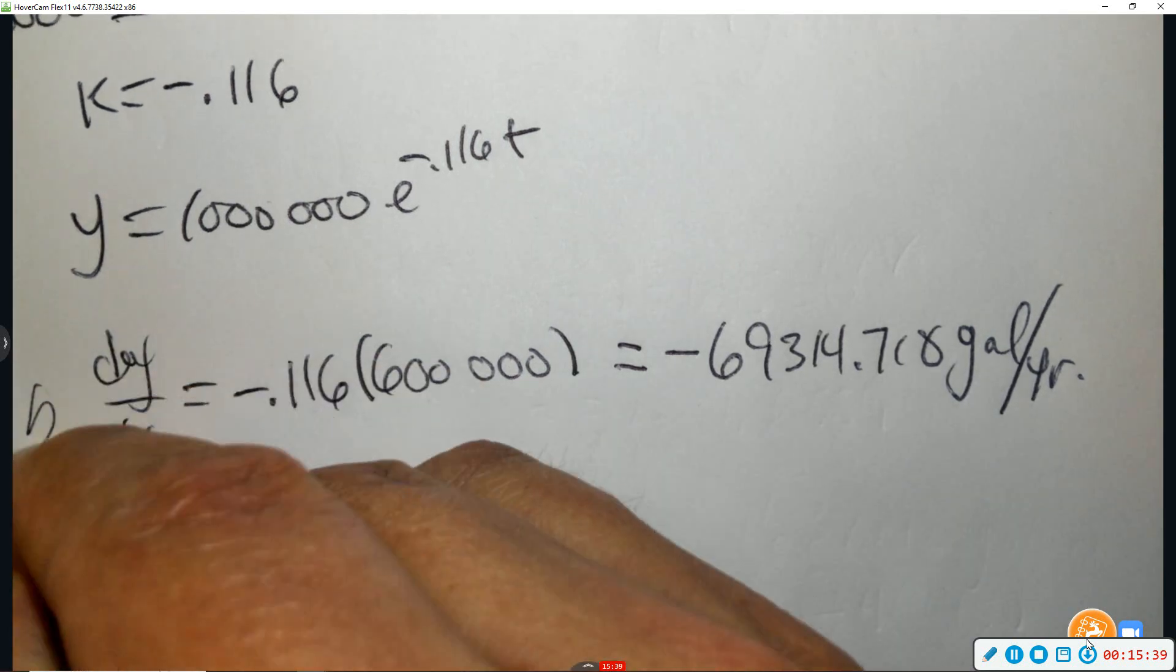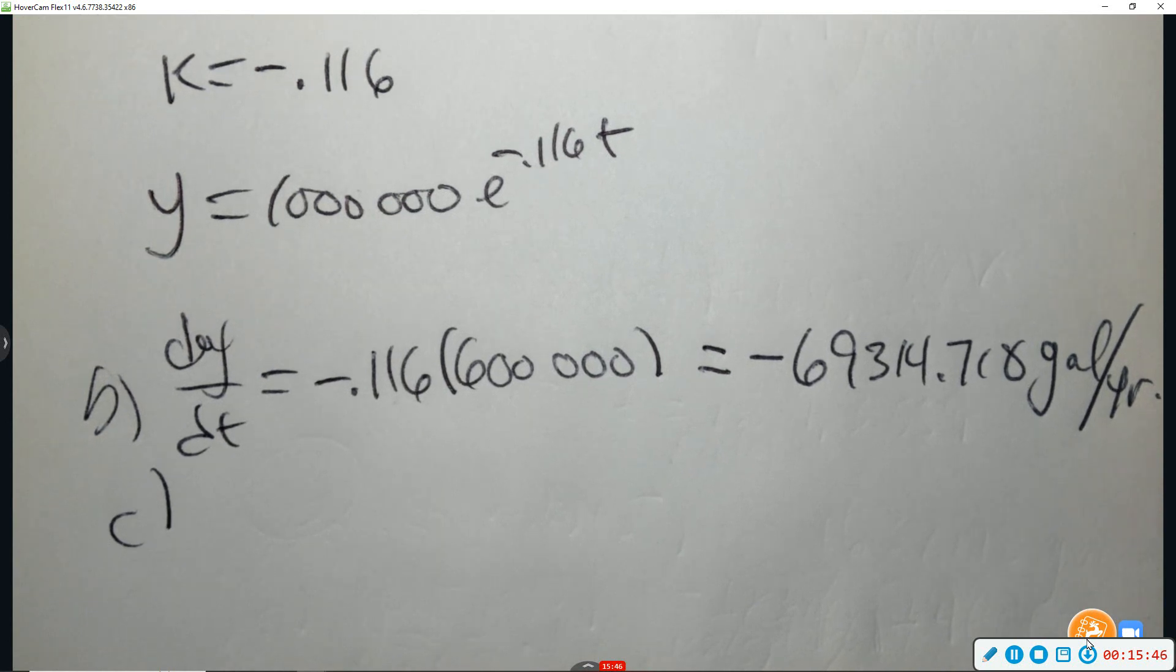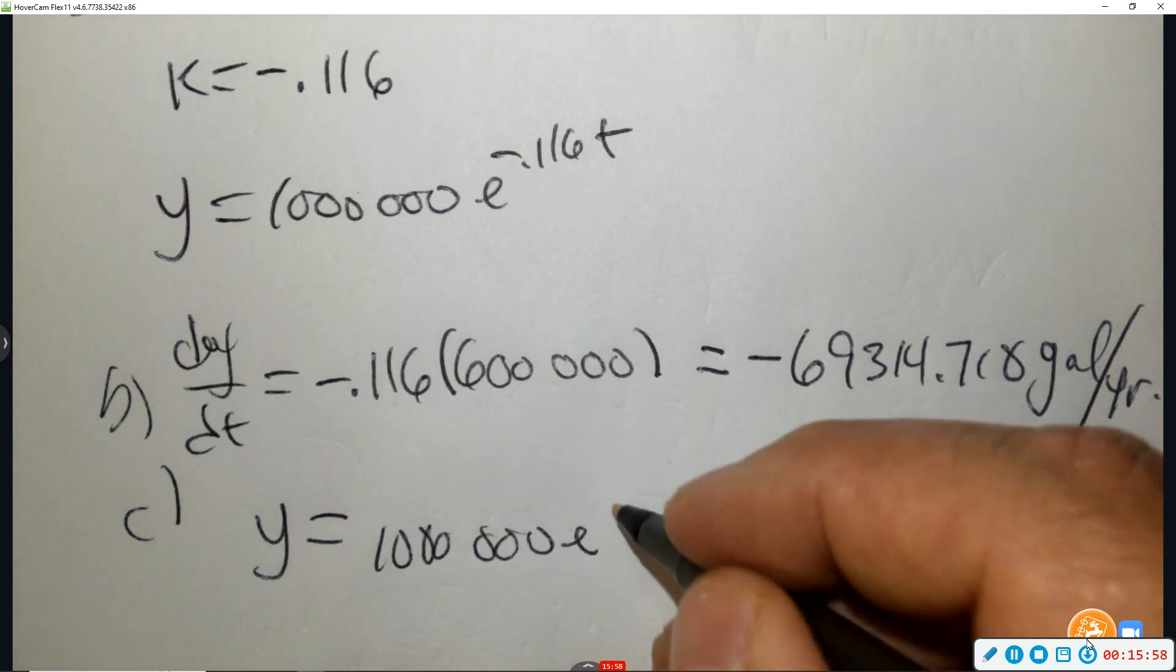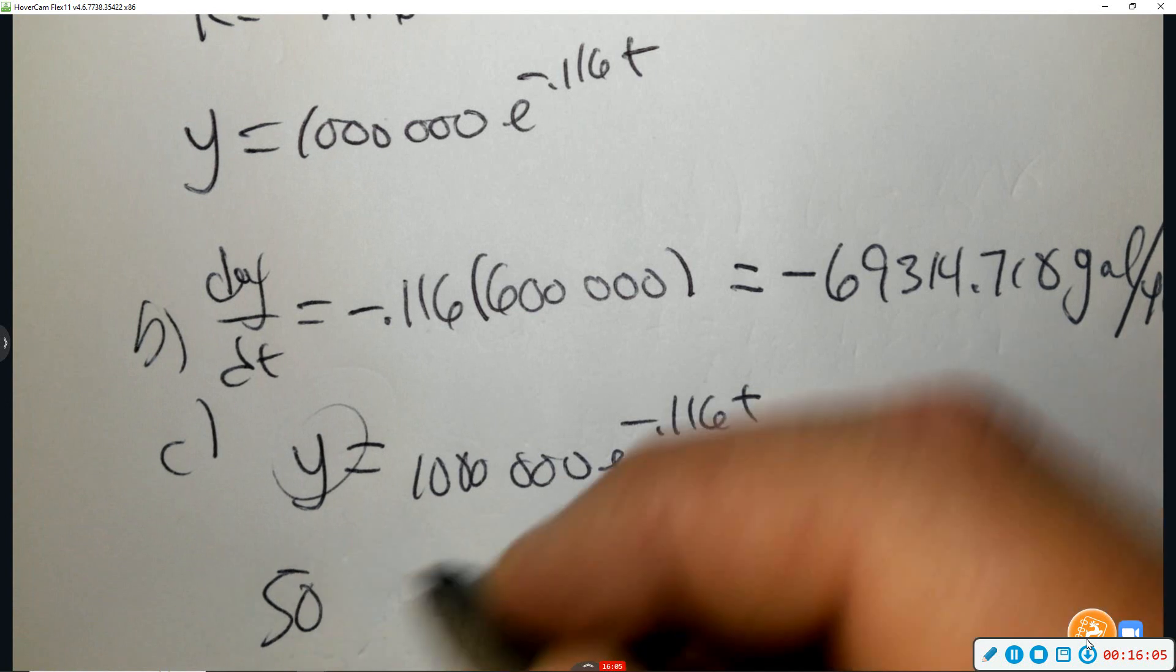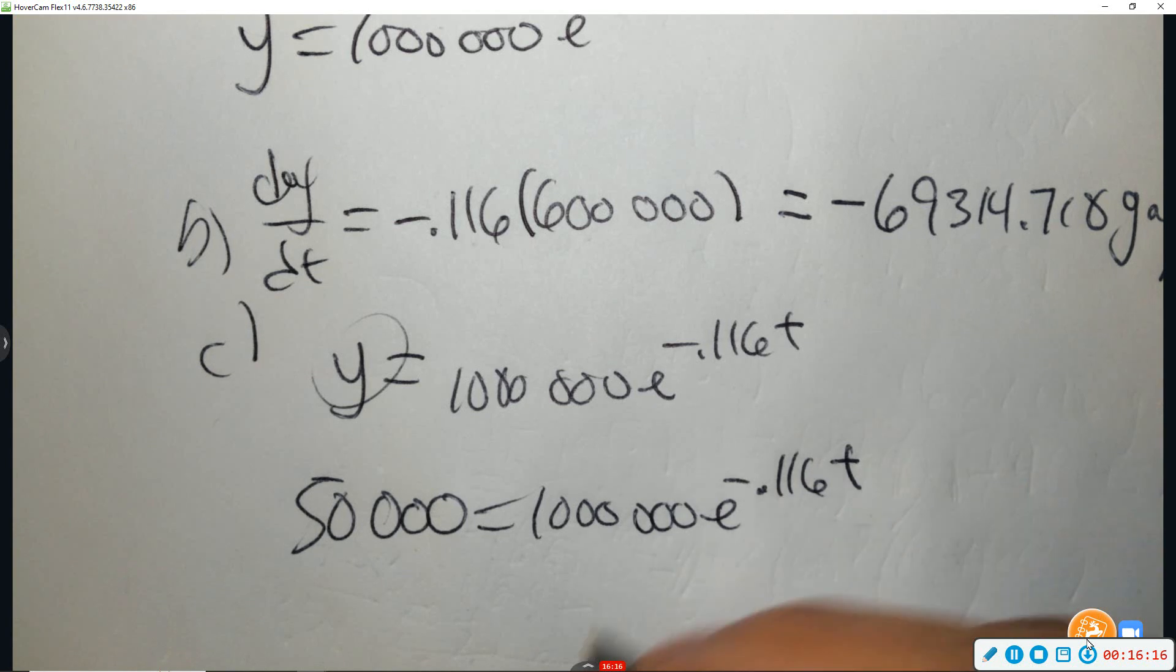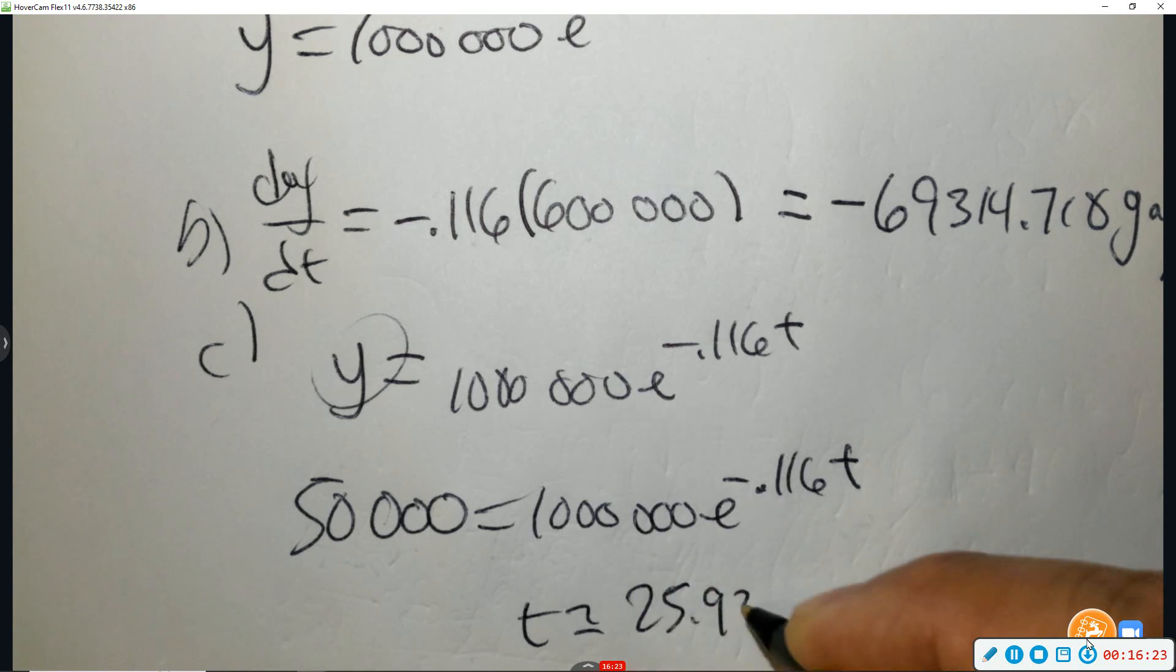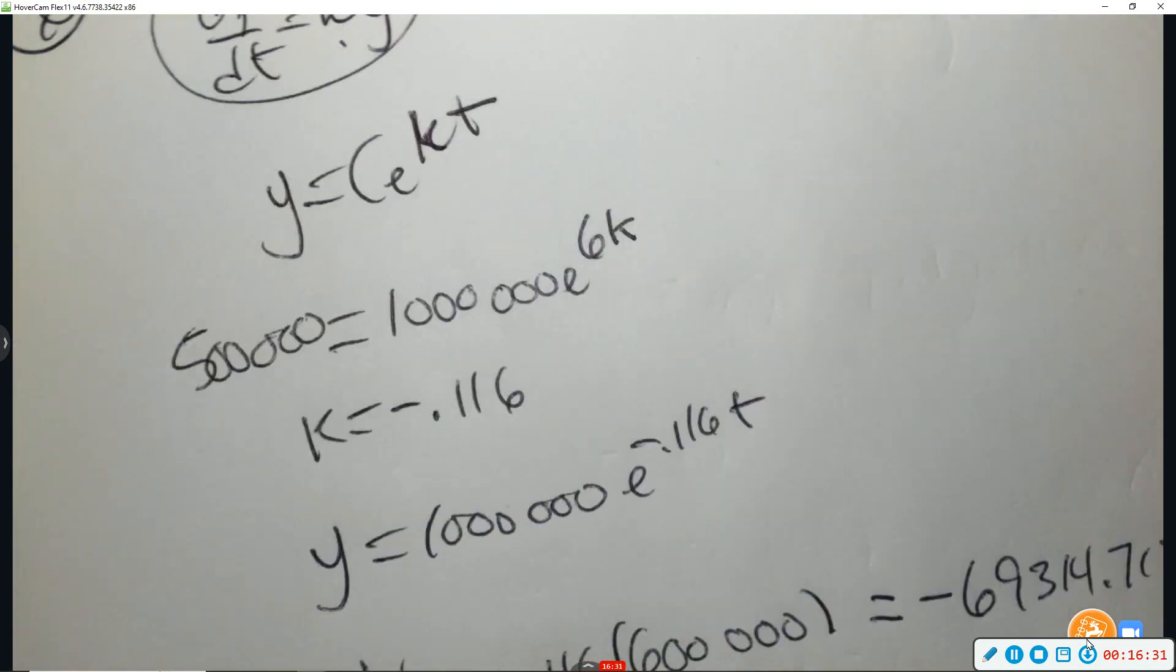That's part B. Part C. In order not to lose money, at what time T should oil no longer be pumped from the well? So it will no longer be profitable when there are fewer than 50,000 gallons remaining. So we've got to go back to this equation. And then Y is going to be that amount, which is 50,000. Then use your calculator and solve for T. And it's 25.932. And you have your answer. All right, over halfway there. Next.